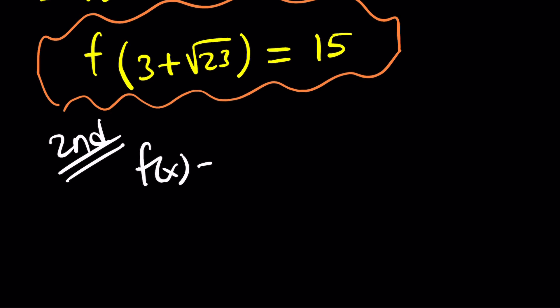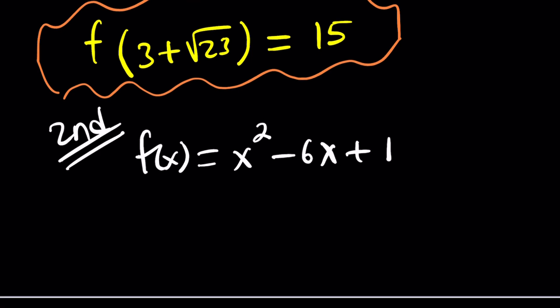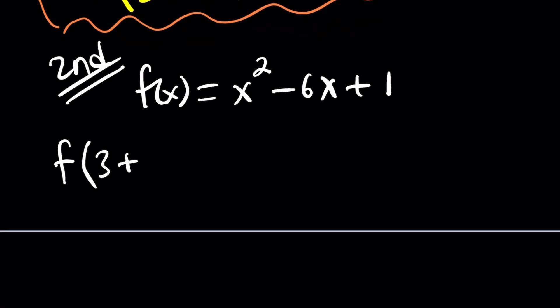So one more time, f of x is given as x squared minus 6x plus 1, and then we are supposed to find f of 3 plus root 23. Obviously, this problem can be changed a little bit without changing the 3, by the way, and you're going to see what I'm talking about. But this could be a square root of something else. So this is what we're looking for. If you plug it in, it's going to be the first method. So we've got to do something different.